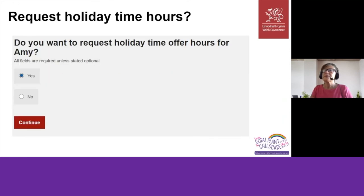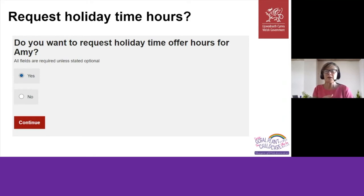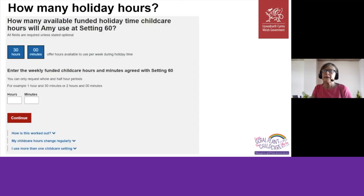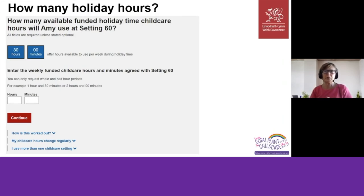The system then asks whether the parent wants holiday time hours. They can continue to request holiday time hours at the same setting or stop there and request holiday time hours with a different setting through a separate agreement. If yes, the system shows the full 30 hours available for holiday time, and the parent inputs the maximum number of hours they expect to need per week — perhaps 30 hours or 20 hours — based on what they've already agreed with the provider offline.